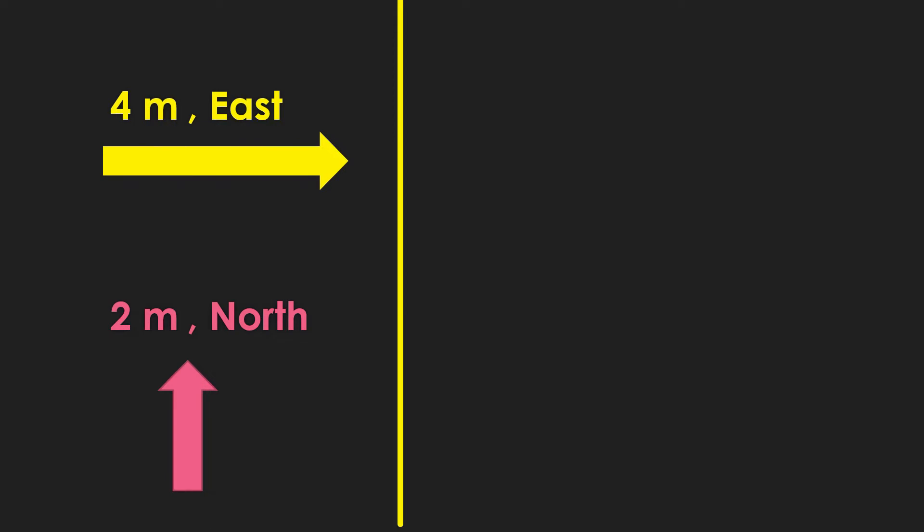Now let's try an easy example. 4 meters east plus 2 meters north. Since we have only two vectors, we see that one vector is heading towards the east, which is our x component, and the other headed towards the north, which is our y component. We should be able to instantly use the Pythagorean theorem with these components.